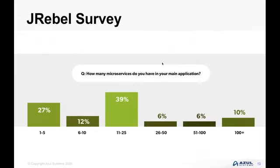I came across a survey done recently by JRebel where they asked developers how many microservices they were using in their main application, with results similar to what we saw from this audience — slightly more shifted toward six to 10 and 11 to 25. The important thing to take away is that most people are using a reasonably small number of microservices. The vast majority are using a dozen or fewer. This is very critical when looking at performance, because the idea of cumulative latency for individual transactions means the more microservices you have, the more that cumulative effect will have a significant impact.